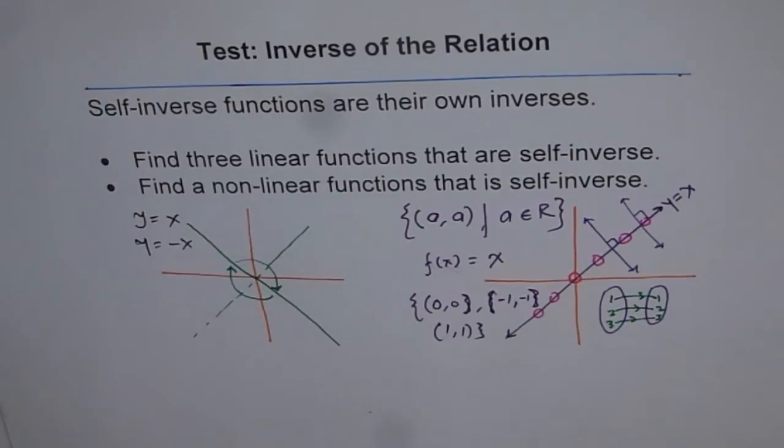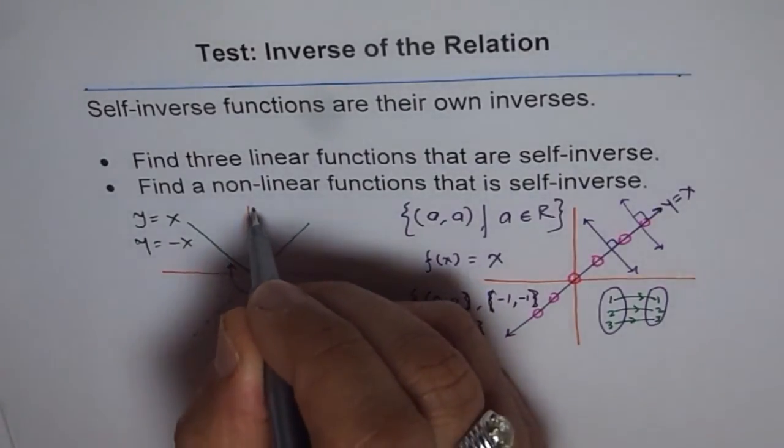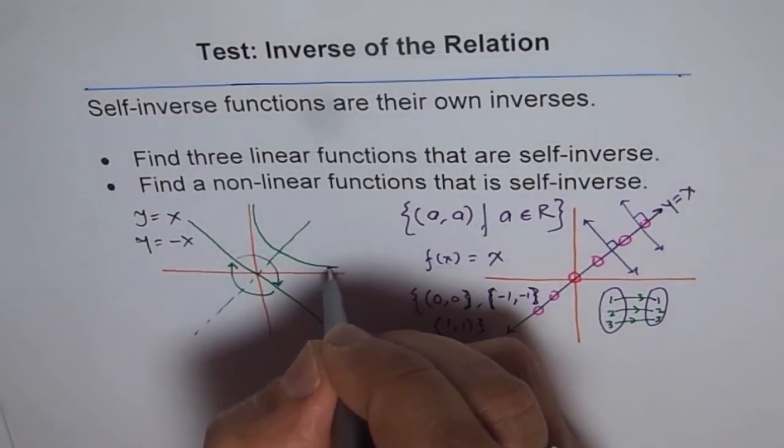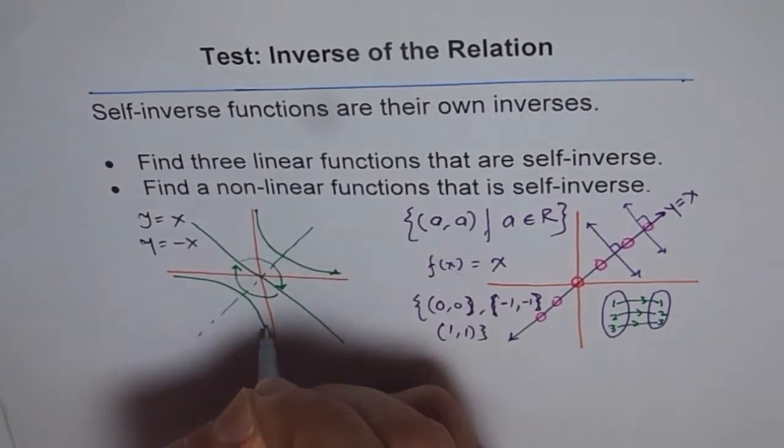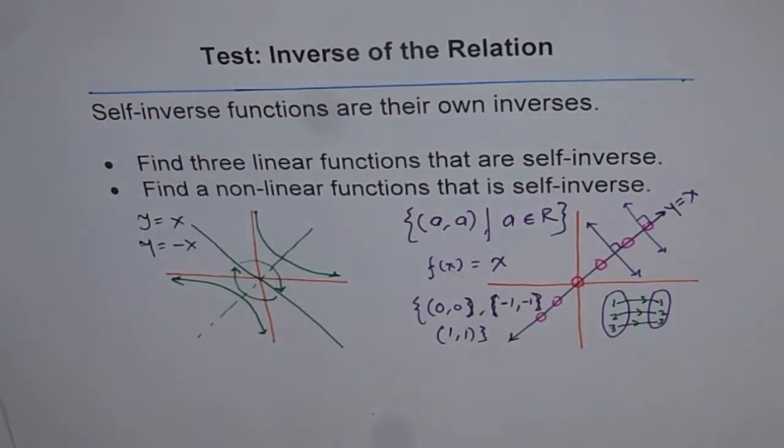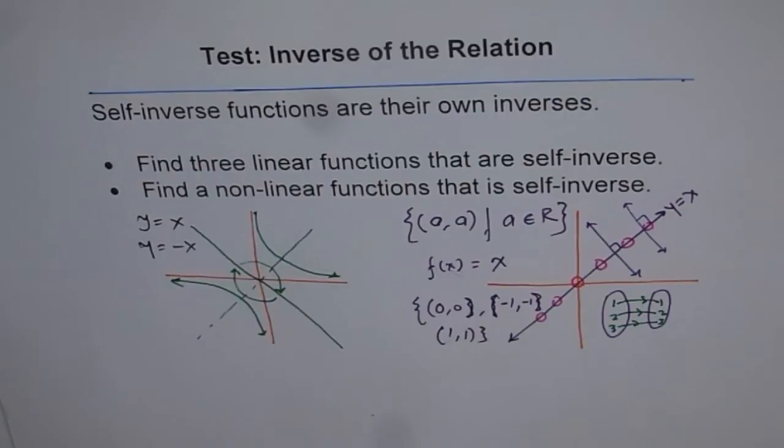So, there are so many ways in which this question can be answered. How about graph of 1 over x? It also reflects on this line onto itself.